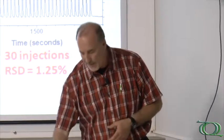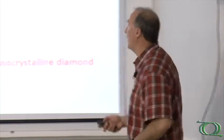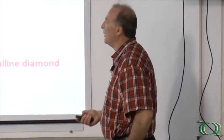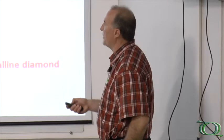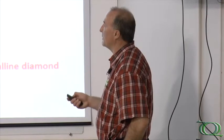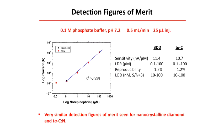Glassy carbon shows more 5% to 10% variability in these kinds of experiments. You can look at how the signal changes as a function of the injected concentration. This is a log current versus log concentration plot. We've got linearity over four orders of magnitude, which is quite good, with a good correlation coefficient. Our detection limit starts to roll off as we get to the 10 nanomolar level here.